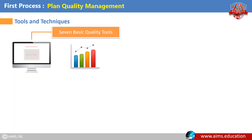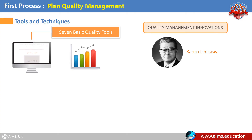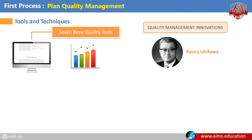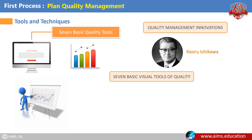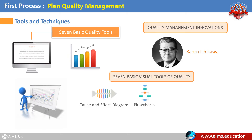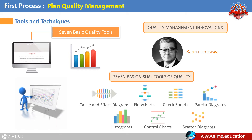The Seven Basic Quality Tools: Kaoru Ishikawa was a Japanese organizational theorist well known for his quality management innovations. He developed seven basic visual tools of quality so that the average person could analyze and interpret data. These seven tools are: a cause and effect diagram, flowcharts, checksheets, Pareto diagrams, histograms, control charts, and scatter diagrams. These tools are used worldwide by companies, managers of all levels, and employees.